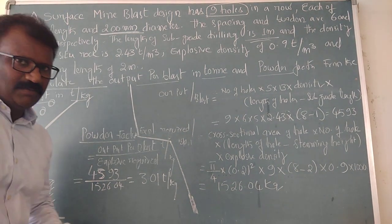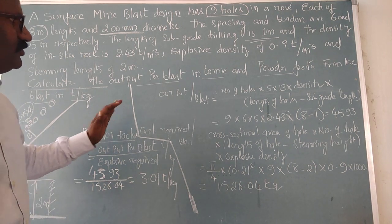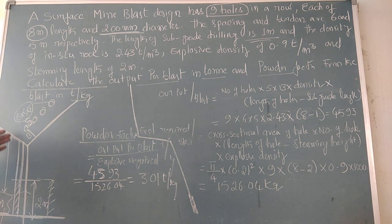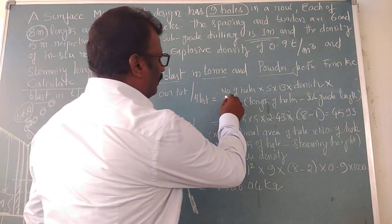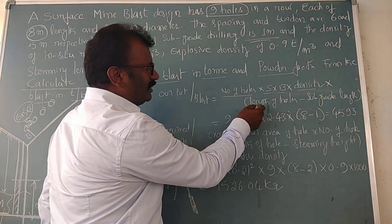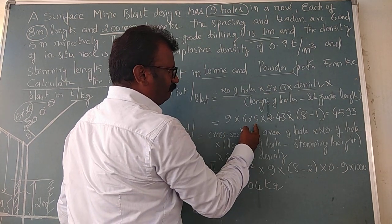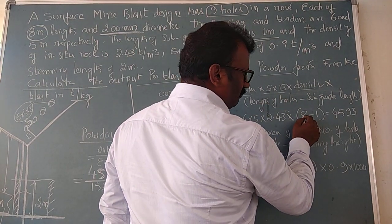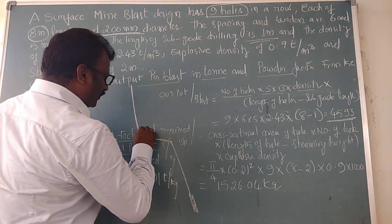Now, before calculating the powder factor, let us calculate the output. Output is obtained from: number of holes multiplied by spacing, burden, density of rock, and effective length of holes. The effective length is the hole length minus subgrade. That gives: 9 holes × 6 m spacing × 5 m burden × 2.43 t/m³ density × (8 − 1) m effective length. This gives the output figure for the blast.